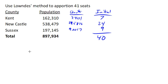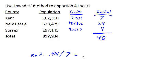Back in Hamilton's method, we just looked at the decimal part. But Lowndes' method is going to look at the ratio of the decimal part to the whole number part. For Kent, it's going to look at the ratio of the decimal part, 0.411, to the whole number part, dividing 0.411 by 7. This ends up adjusting the decimal part relative to the size of the state.